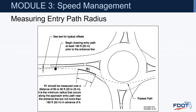For measuring the entry path radius, the dashed line represents the fastest path we'll establish. We begin drawing that entry path at least 165 feet prior to the entrance line using those offsets. Then R1 should be measured over a distance of 65 to 80 feet — it is the minimum radius that occurs along the approach entry path near the entrance line, but not more than 165 feet in advance of it. Once the fastest path is established, we draw an arc at the smallest location, hopefully near that crosswalk area, and then determine the speed based on that radius.